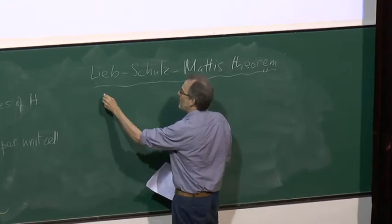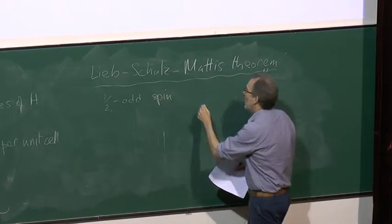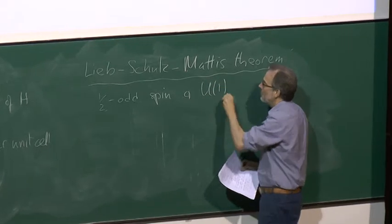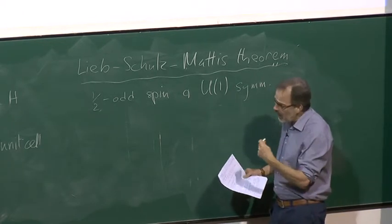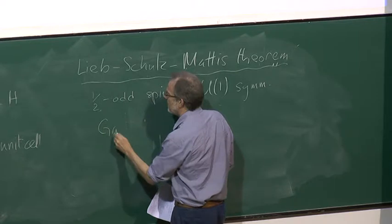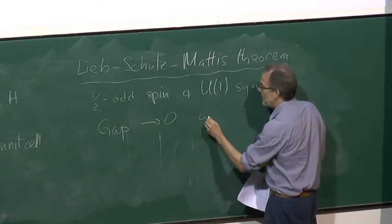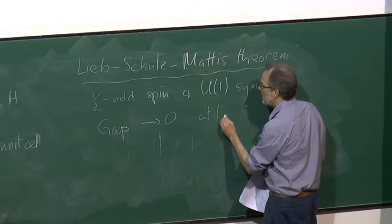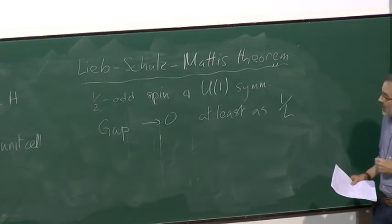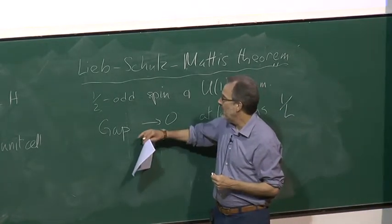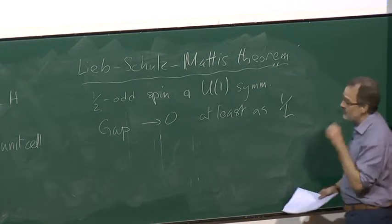There's a reasonably general result telling you that something more interesting should happen if you have half-odd-integer spin, known as the Lieb-Schultz-Mattis theorem. It states that if you have half-odd-integer spin and at least U(1) rotational symmetry, then the gap between the ground state and the first excited state goes to zero as the system size goes to infinity, at least as fast as one over the linear system size. So you have some low-energy states, and there are various ways in which that can happen.